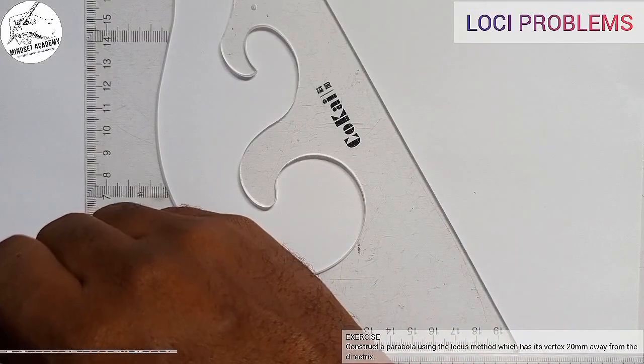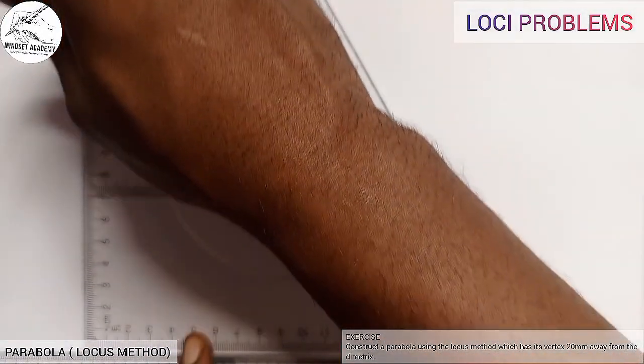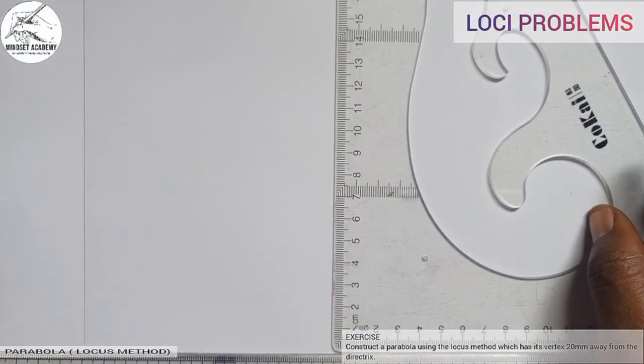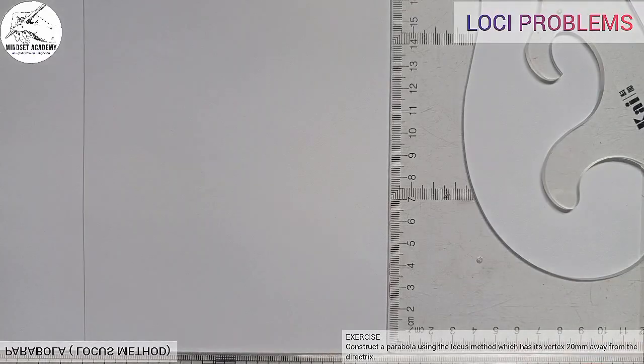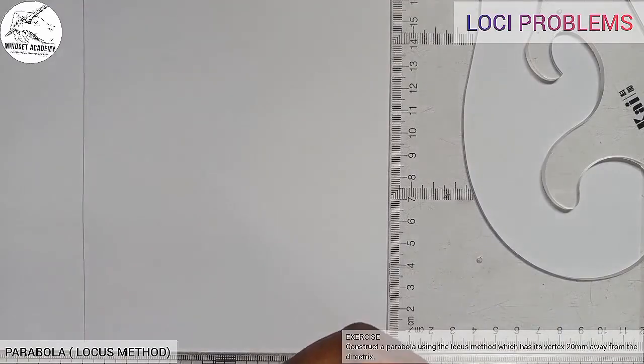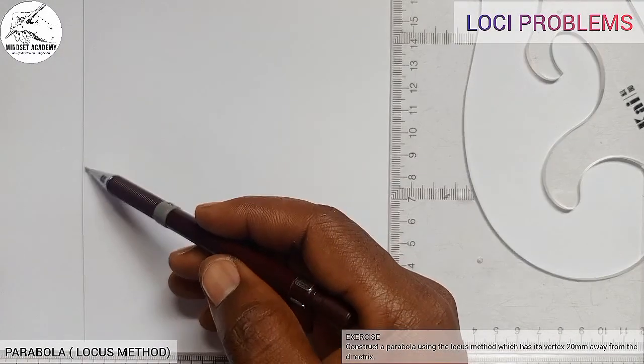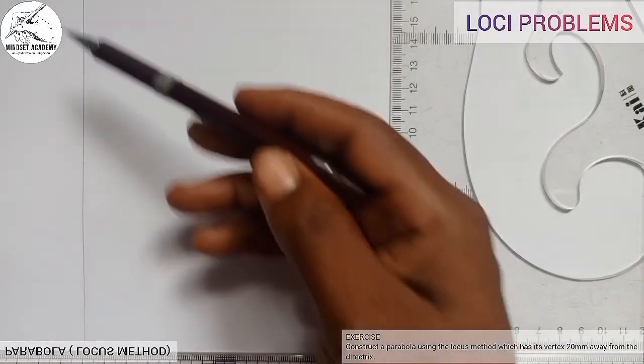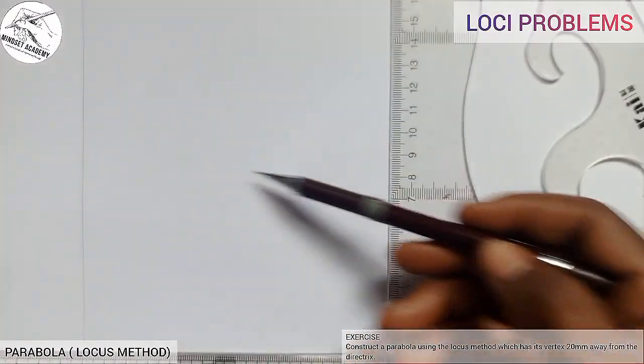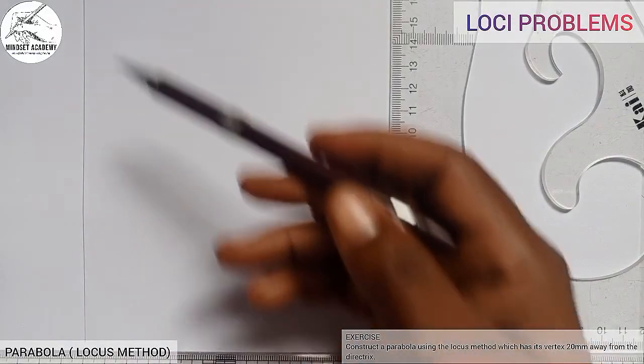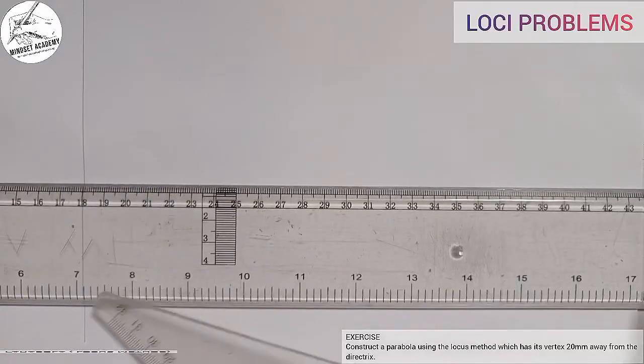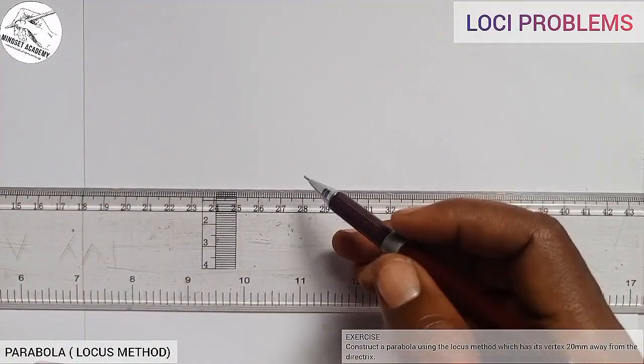It will be a thickened line. In some cases you might be given the length of the directrix, but in this case since it is not given, you can draw your horizontal line at any given distance. But if it is given, for instance, let's say the directrix is 100, that means the horizontal line you are drawing will be at a distance of 50, that is half of the directrix.